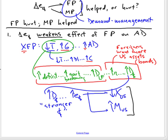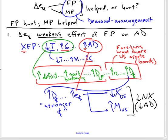The net effect is to reduce net exports, which is a negative influence on aggregate demand. Now, the aim of our expansionary fiscal policy was to raise aggregate demand, but the international effect through a stronger dollar is to reduce that expansion of aggregate demand. So this is a little bit like crowding out — you can think of this as an international form of crowding out. It doesn't mean that aggregate demand won't rise; it just means that it will rise by less.